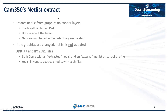CAM 350's netlist extract creates the CAM 350 netlist from graphics on copper layers. It starts with a flash pad, then finds any traces, polygons, or other pads that connect to that pad, making them all into the same net. It also looks for drills that pass through those graphics and connects them to other layers. Once done, it numbers nets in the order they were found — the first is net zero, then net one, and so on. If graphics are changed after netlist extract is done, the netlist is not updated.